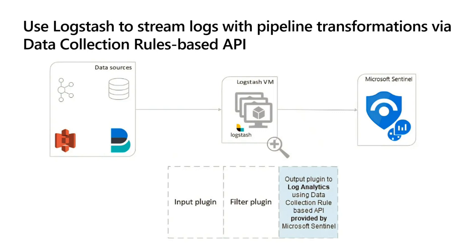The plug-in is going to forward any type of logs from these external data sources into custom or potentially standardized tables in Microsoft Sentinel. With the Logstash plug-in, you can control the configuration of column names and types of data being pulled in. You can do ingestion time transformations — things like filtering out certain types of data or enriching certain types of data, perhaps with data from a watch list.